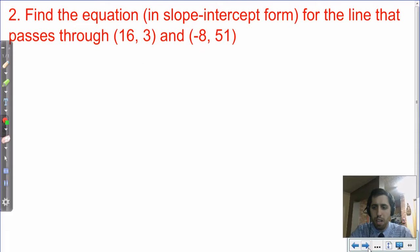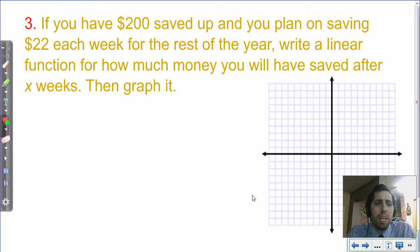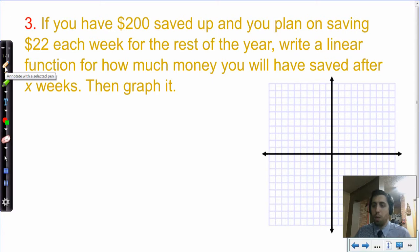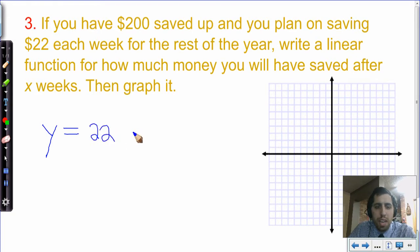Let's look at one more. This one says if you have $200 saved up and you plan on saving $22 a week for the rest of the year, write a linear function for how much money you will have saved after X weeks. Then graph it. So in this case, I'm trying to see that we know how to look at a word problem and write a linear equation from it. So we know that we're having a dependent variable. What is the dependent variable in this case? How much money we'll have is based on the number of weeks. It's dependent on the number of weeks. So this is the amount of money. What's the amount of money equal to? Well, it's equal to 22 and 200. But we have one set of 200. That's what we already have. That's not being added repeatedly. But 22 is being repeatedly added or it's being multiplied by the number of weeks. So we have Y equals 22X plus 200.